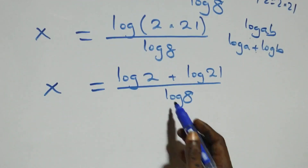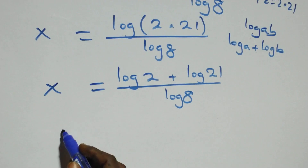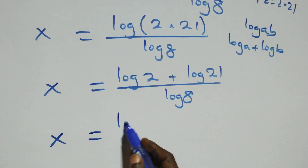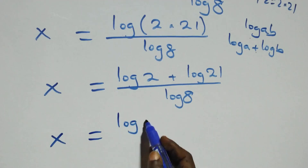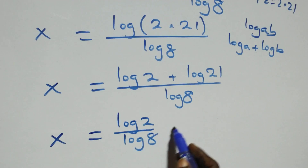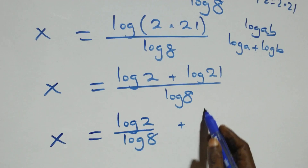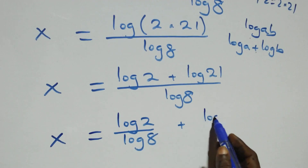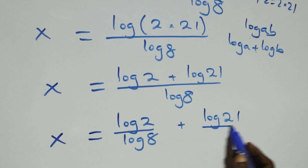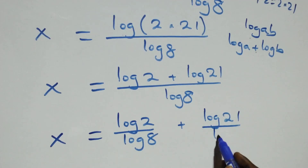We separate this into two fractions: x equals log2 over log8 plus log21 over log8.